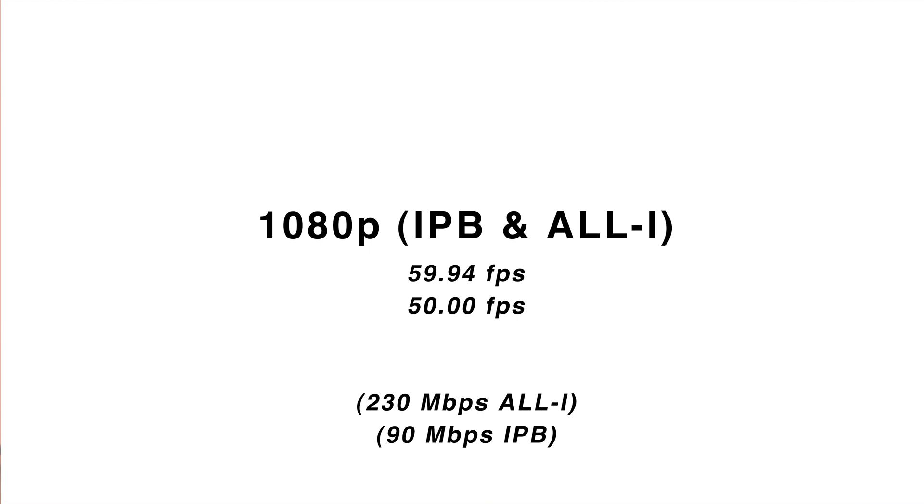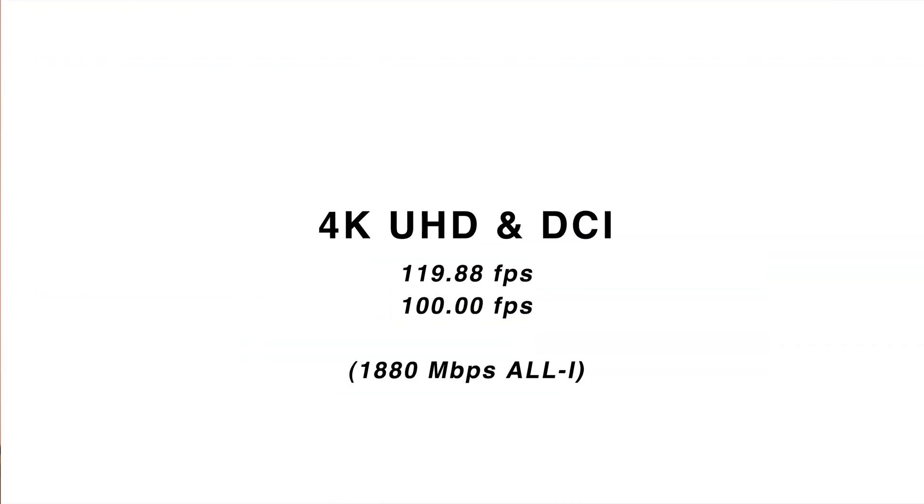Now we're going to get into the fun stuff, starting with 4K 120 frames per second — or 100 frames per second, depending on what part of the world you live in. This mode can only be shot in All-I. This 4K 120fps mode applies in both UHD and DCI. If you're curious about the difference, DCI is slightly wider, so it won't be the same aspect ratio.